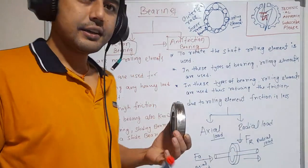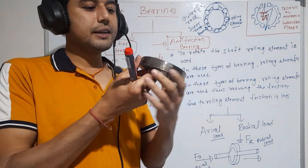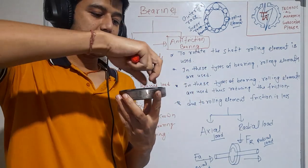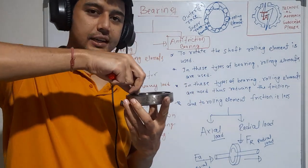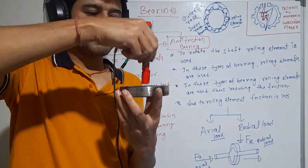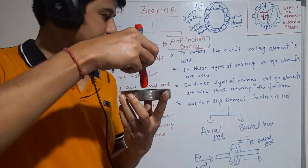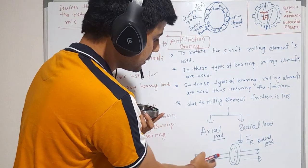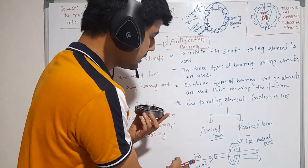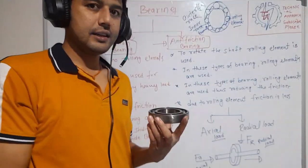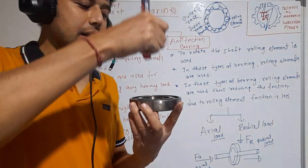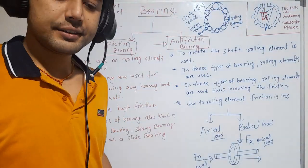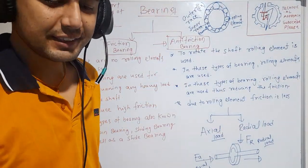Now, suppose my bearing is oriented like that and the motion is like this, with the shaft like this. Then the load is axial — it is parallel to the shaft. Is that clear? Okay.